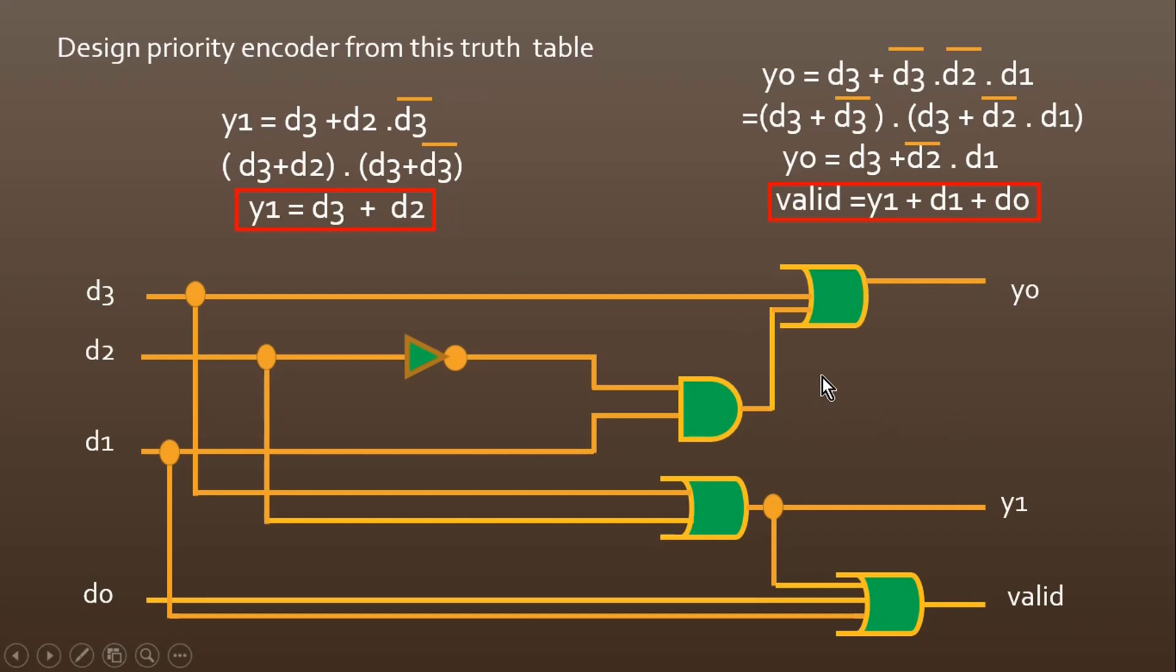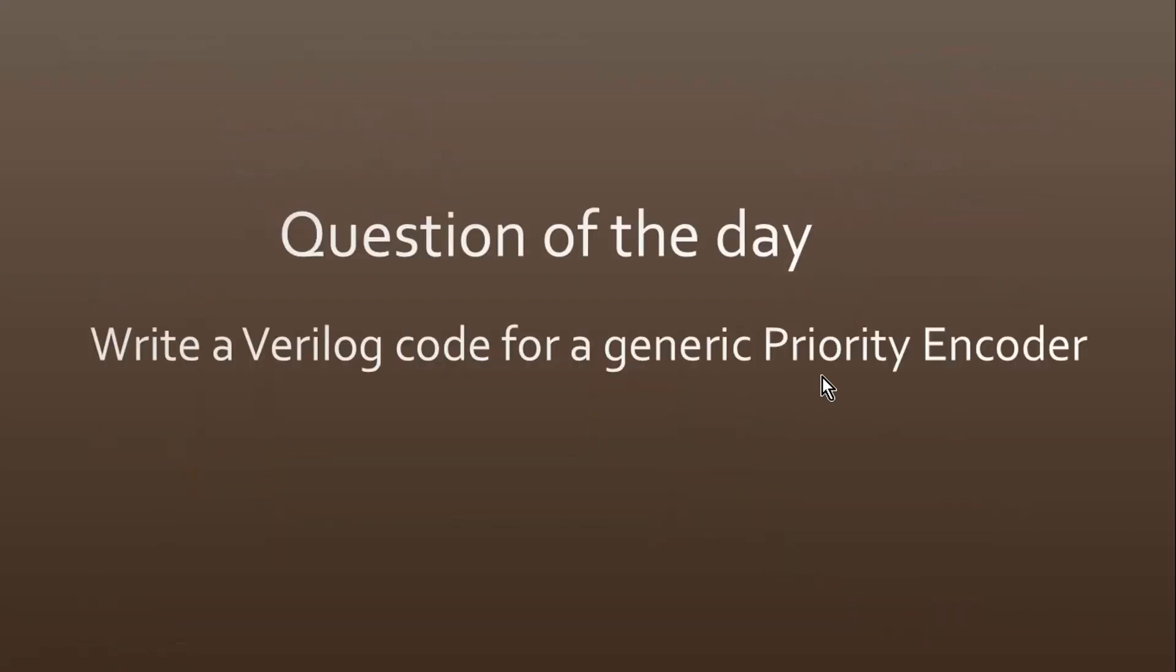But now I have a question for you, and the question of the day is: you have to write Verilog code for a generic priority encoder. Friends, although I have created a separate video on this generic priority encoder and I will give its link in the description section as well as in the i-button section.